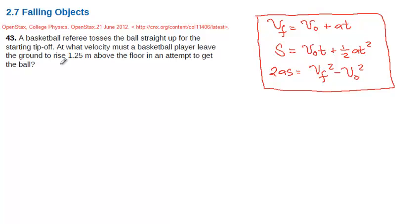Welcome back. Now let's talk about problem 43 from chapter 2 of OpenStax College Physics. So we have it here. A basketball referee tosses a ball straight up for the starting tip-off. At what velocity must a basketball player leave the ground to rise 1.25 meters above the floor in an attempt to get the ball?